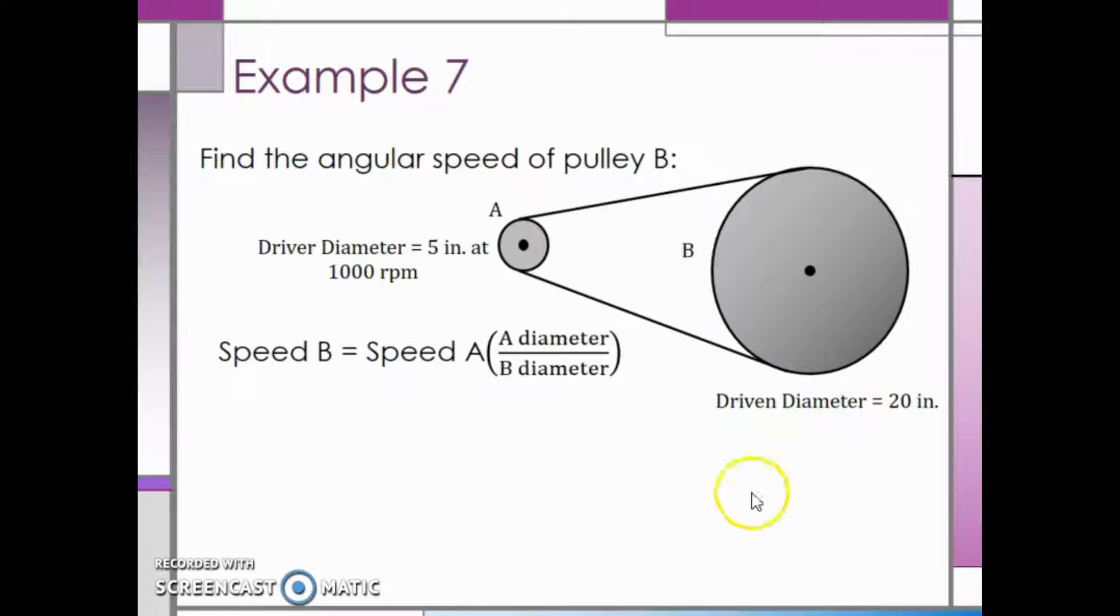The speed of B is equal to the speed of A multiplied by the diameter of A divided by the diameter of B. We can then substitute in our values for speed and diameter. So we have 1000 RPM multiplied by 5 inches divided by 20 inches. This means that the speed of pulley B is 250 RPM.